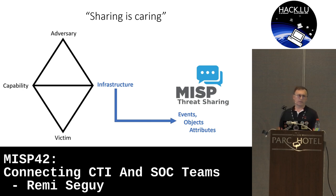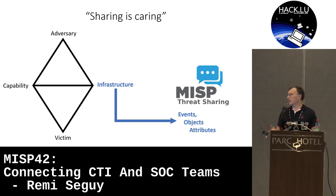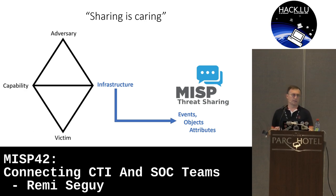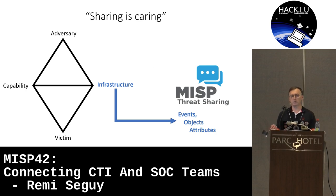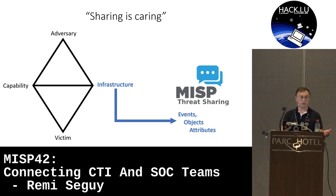Ten years ago, it was difficult to share or receive such indicators in confidence. MISP has been a game changer, and now it's expected that in any security report or feed, you get a link to a MISP event with the context, the attributes, etc. The added value of CTI really comes with sharing it, because you give others the opportunity to check if they were also impacted, or to be more prepared in case they receive the attack later. As soon as you join a MISP community, you may have access to hundreds of thousands of indicators in a structured and actionable way.